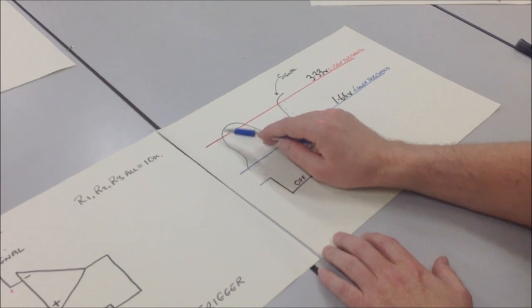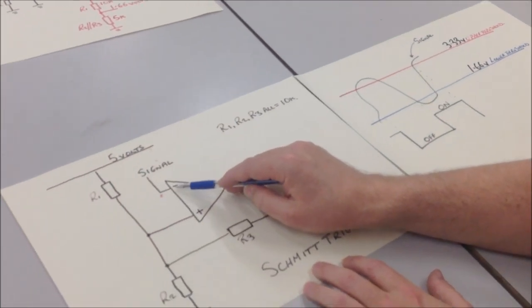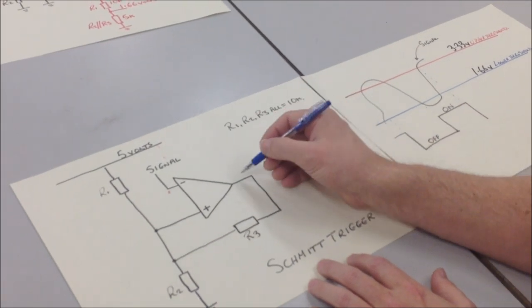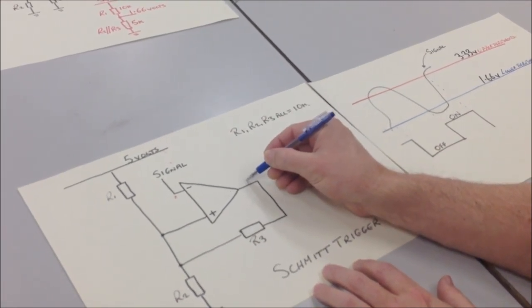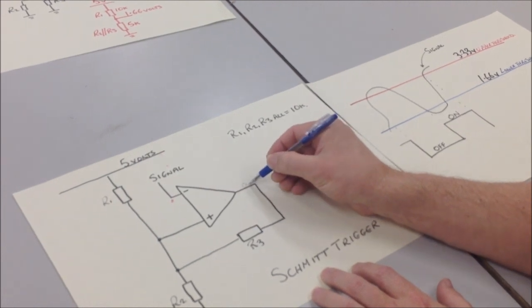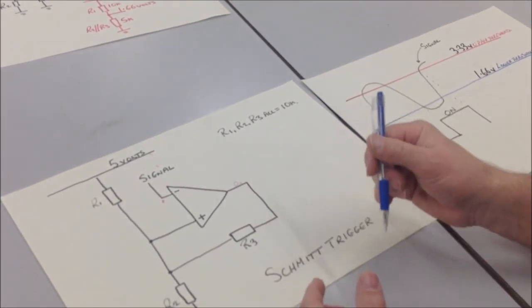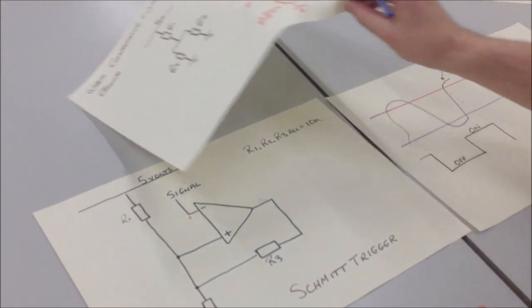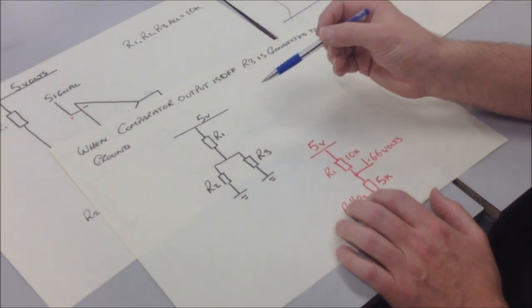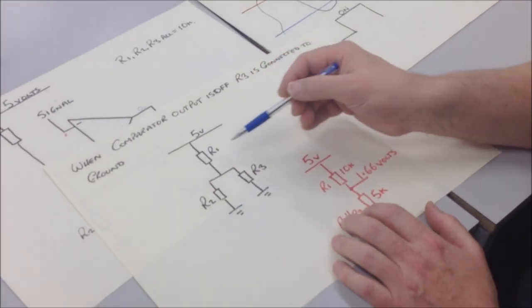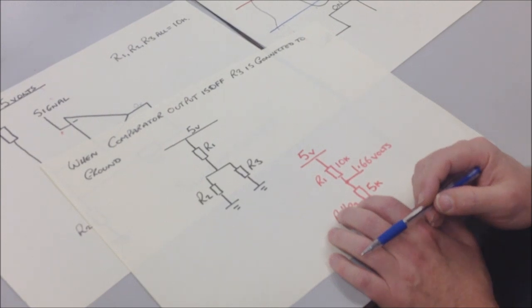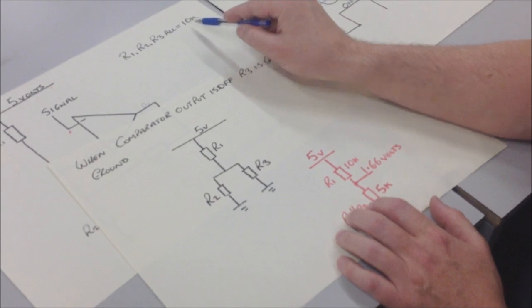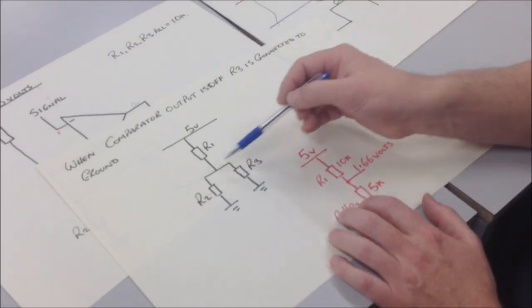So when it goes above the upper threshold, there's our signal, and we said that when the signal goes above the upper threshold, the comparator will switch off. So that's going to be at zero volts there. So what effectively happens is we have a voltage divider here, where R1 remains at 10k, but R2 and R3 are in parallel with each other. And because R2 and R3 are in parallel and they are at 10k, their effective resistance becomes 5k.